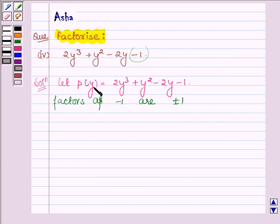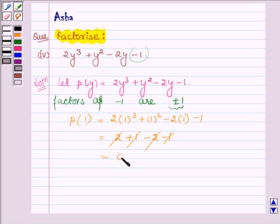So we will replace y by these factors such that the value of the polynomial comes out to be 0. On observing we find that on replacing y by 1 we get 2(1)³ + (1)² - 2(1) - 1 which equals 2 + 1 - 2 - 1. The 2 cancels with -2 and 1 with -1 so we are left with 0.